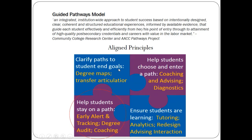The third principle is to help students stay on path. This is where the retention alert system really comes into play, because it's designed for instructors and student support staff to communicate and send out warnings when a student is veering off their path — such as not showing up to class or missing assignments — so you can catch them and steer them back on track. The fourth principle is to ensure students are learning, where tutoring and different analytics come into play to make sure students are obtaining the content being taught.